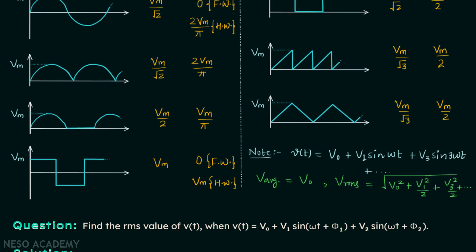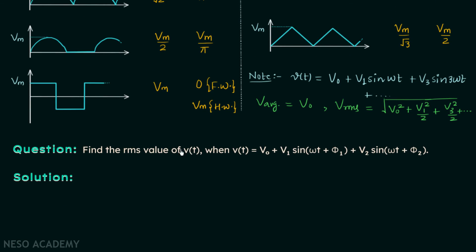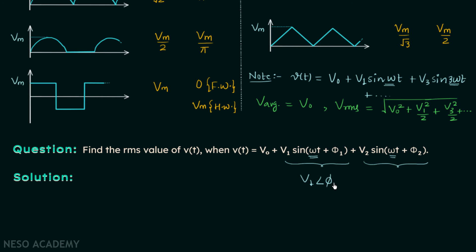We will now take a question: find the RMS value of V(t) when V(t) equals V0 plus V1 sin(ωt + φ1) plus V2 sin(ωt + φ2). We cannot directly apply the harmonics formula here because both sinusoidal terms have the same frequency component. Therefore, we must first combine them using phasor representation: V1 at angle φ1 and V2 at angle φ2.